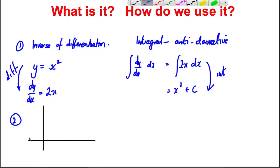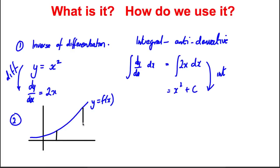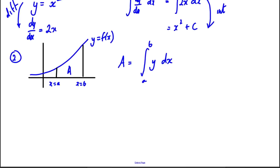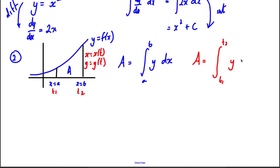Secondly, we use integration a lot for the area under a curve. Suppose we have a curve y = f(x) and we want to find the area from x = a to x = b. The area is the integral between a and b of y with respect to x. If x and y are given parametrically in terms of t, the area is the integral between t1 and t2 of y times dx/dt dt.